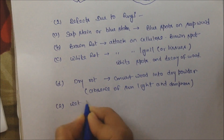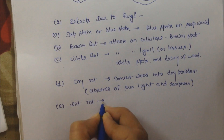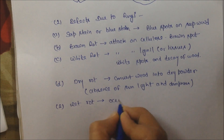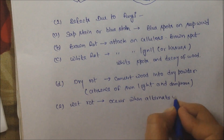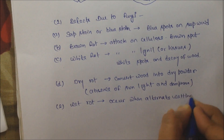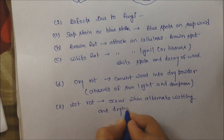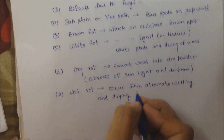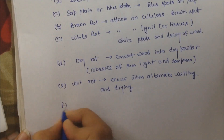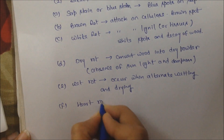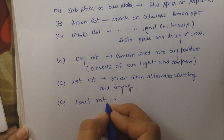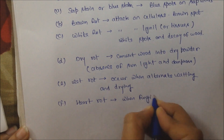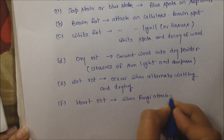Next is Wet Rot. It occurs when there is alternate wetting and drying, and fungi decompose the tree. Next is Heart Rot — when a branch is separated from the tree, the heartwood is exposed and fungi attack on heartwood. That is called Heart Rot.